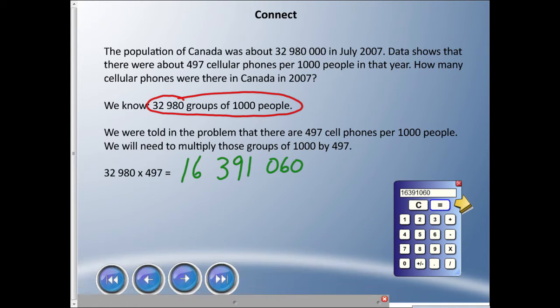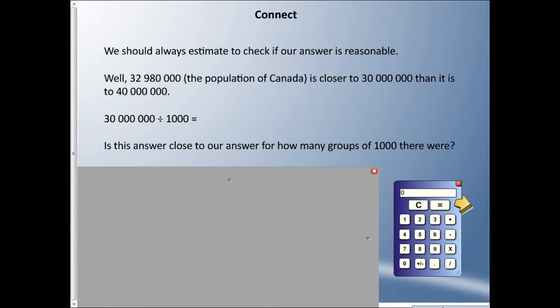That seems like a really large number. To figure out if we're out to lunch, maybe we should do something called estimating. Estimating is finding an answer that is reasonable—it's a close answer, not necessarily the exact answer. The population of Canada was 32,980,000. If we estimate, let's round down to 30 million.